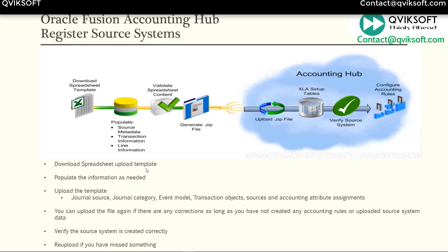We'll download the spreadsheet template, which can be uploaded in the system to generate your source systems. We'll populate the information as needed depending on what header and line information we have. Once the template is ready, we upload it and the system automatically creates journal source, journal category, event model, transaction object, source, and accounting attribute assignment. You just provide the basic information required in the template and all this will be auto-generated by the system when you upload.